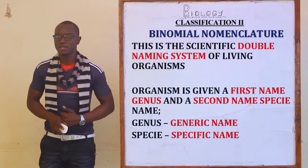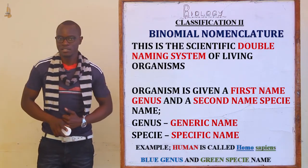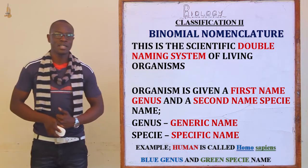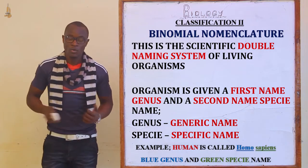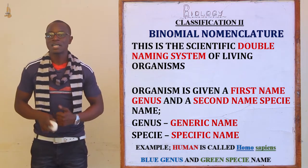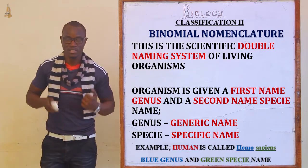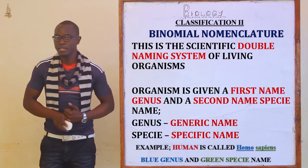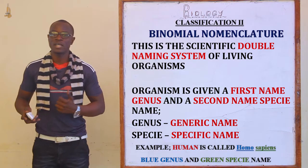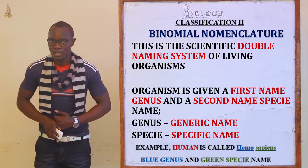Let's also remind ourselves what binomial nomenclature is. We define binomial nomenclature as the scientific double naming system of living organisms, whereby the organism is given a genus name and a species name.